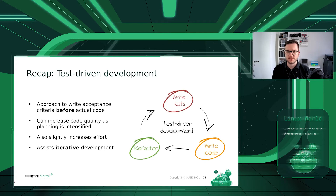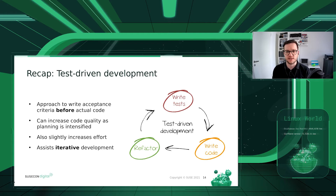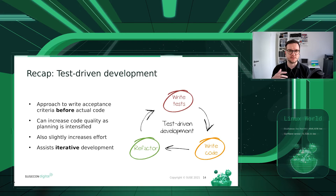Looking at the diagram, the first step is to write tests — for example, a test that checks whether Apache is installed on the server, and another that checks whether the starting page has been replaced. You then run these tests on a new system and they fail because the machine has no Apache installed. The next step is to write the actual code that does exactly what those tests check: code that installs Apache 2 and replaces the starting page.